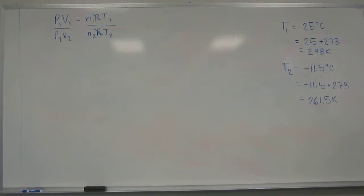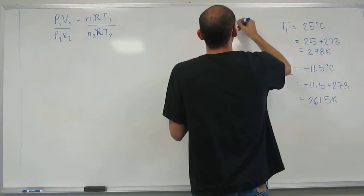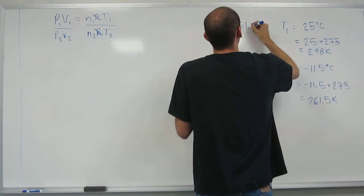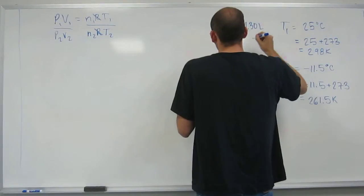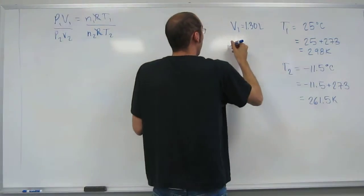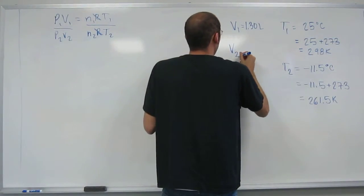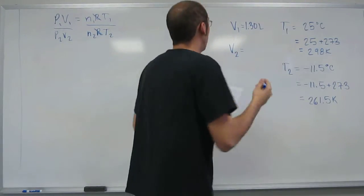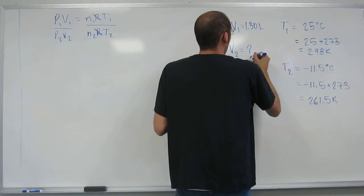Okay, and it also gives us volume, initial volume. So V1 is 1.30 liters, and that's the units you wanted in. Okay? And then V2 is what we're looking for. It says what's the new volume?